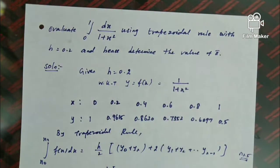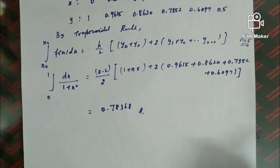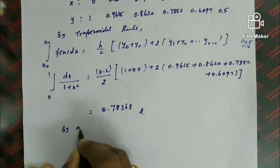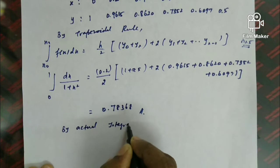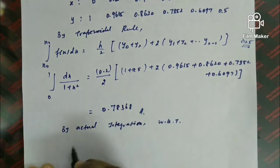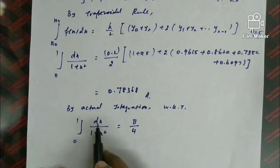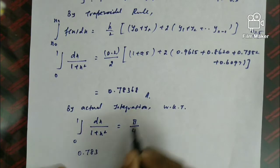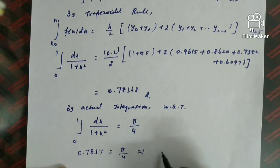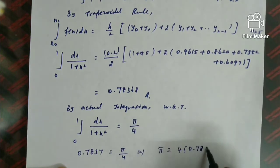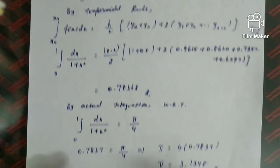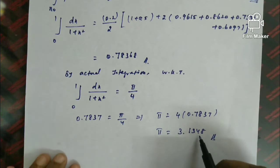The second part determines the value of pi. By actual integration, we know that the integral from 0 to 1 of dx/(1 + x²) equals π/4. The left-hand side was found to be approximately 0.7837. Therefore, 0.7837 = π/4, which implies π = 4 × 0.7837 = 3.1348.